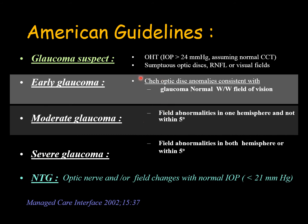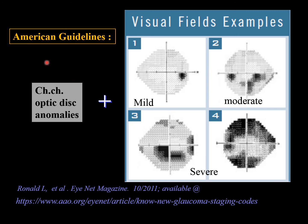Severe glaucoma has extensive field changes in both hemispheres or involvement within the central 5 degrees. In all stages there are characteristic disc changes visible on biomicroscopy or OCT. To summarize: normal field is early; field changes in one hemisphere is moderate; changes in both hemispheres or within the central 5 degrees is severe.